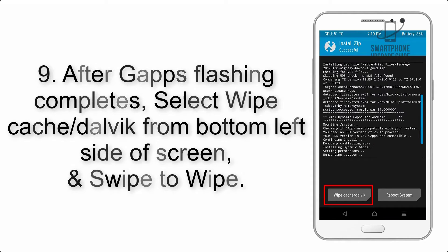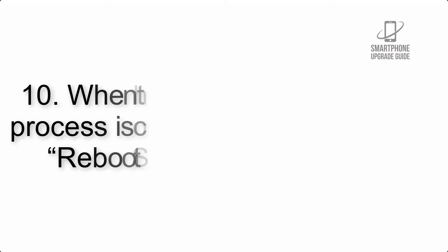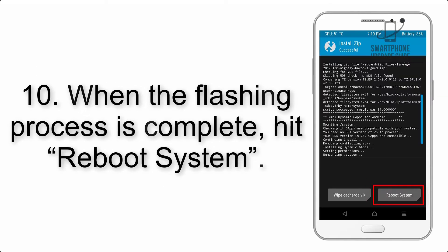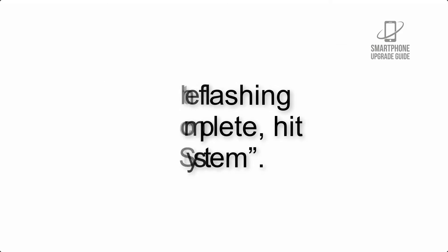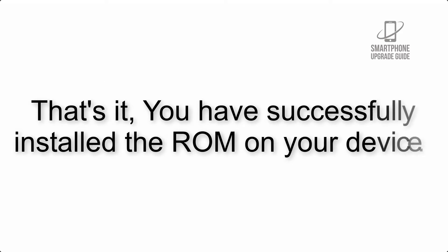Step 8: Flash the gapps zip package in the same manner. Step 9: After gapps flashing completes, select Wipe Cache and Dalvik from the bottom left side of the screen and swipe to wipe. Step 10: When the flashing process is complete, hit Reboot System. That's it — you have successfully installed the ROM on your device.